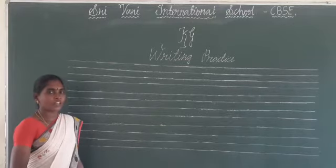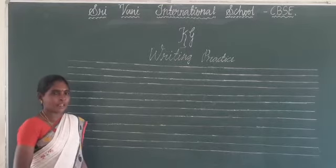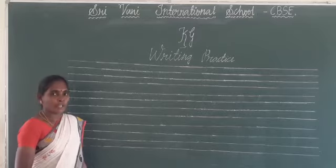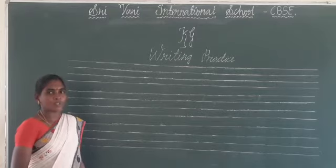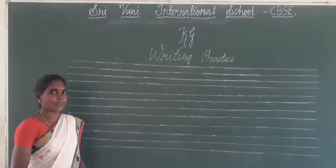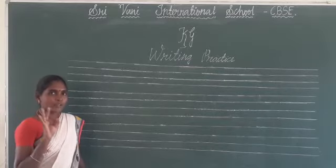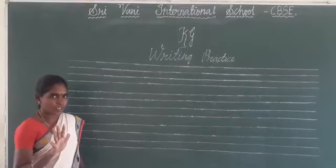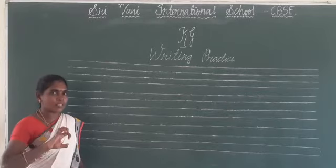Children, I hope you might have all learned the sounds of 26 letters. And today we are going to write the words of short vowel sounds. What are the short vowels? A, E, I, O, U.